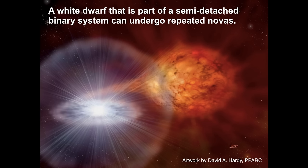A white dwarf that is part of a semi-detached binary system can undergo repeated novae. We have the white dwarf with perhaps a red giant very close by. As the red giant expands, the gravitational balance point tips toward the white dwarf, and because both stars are orbiting each other rapidly, material flows in a stream-like structure forming a disk around the white dwarf.